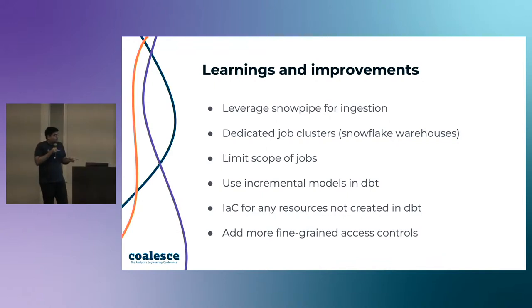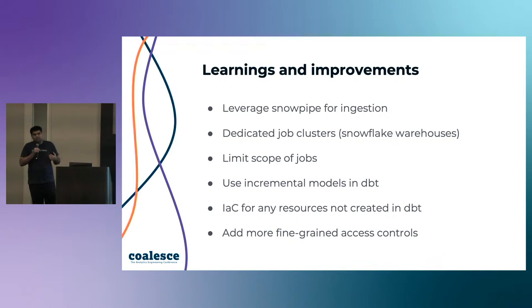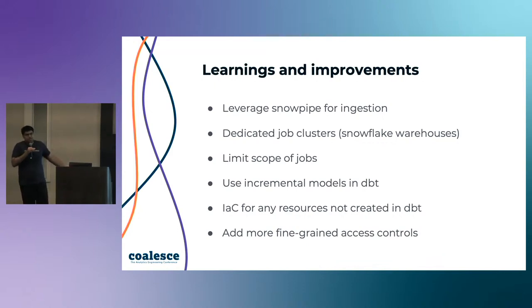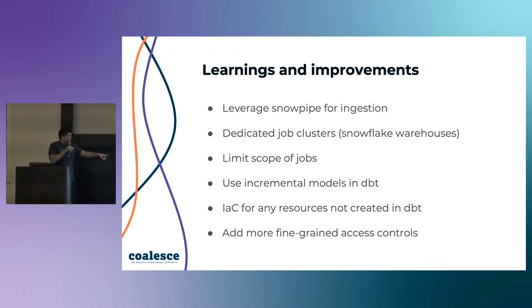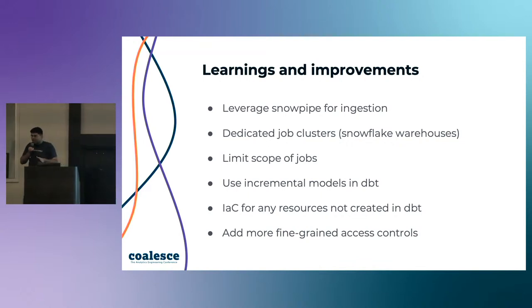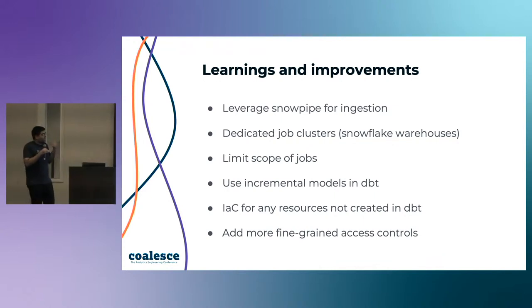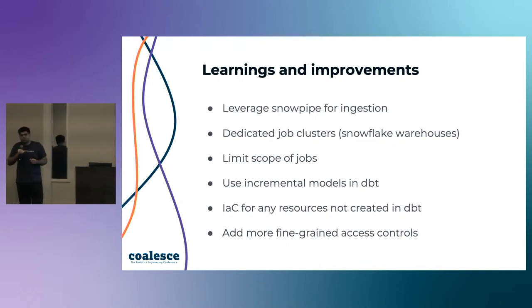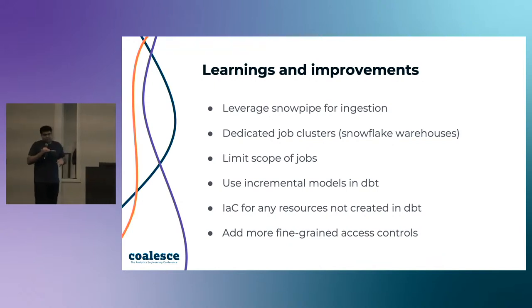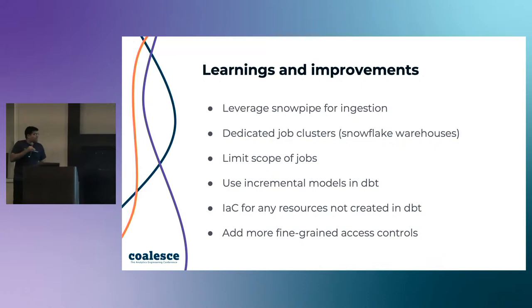We also started leveraging more incremental models, which are more complicated to set up and require understanding backfilling, but they improve pipeline speed significantly — instead of loading all hundred thousand rows again, you only load the delta. From my backend side, we started leveraging more infrastructure as code through Terraform, so any resources not created in dbt are codified. We can have managed dev and production environments and recreate things with a good source of truth: roles defined, Snowpipes defined, everything codified. Part of that was also adding more fine-grained access controls.